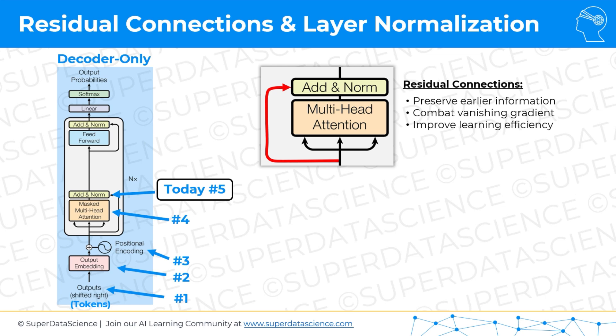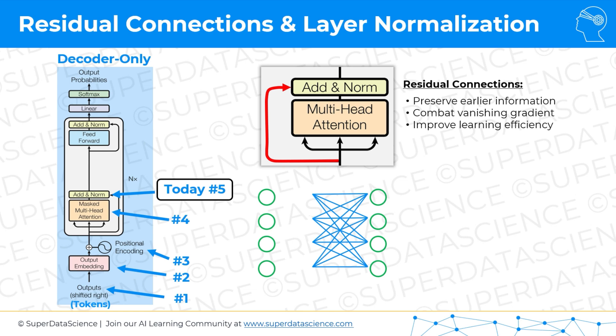Now in terms of layer normalization — here we've got our neural network and on the left that's the point in the network where the multi-head attention is finished, or whatever preceding operation we had is finished, and we've done the addition of the residual connections. Now we have some values in these nodes. Before we let them propagate further through the network, we're going to normalize this whole layer: we take the mean, subtract the mean, and divide by the standard deviation. We get these values and then they propagate through the network.